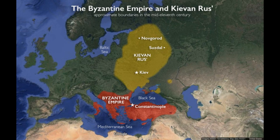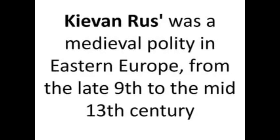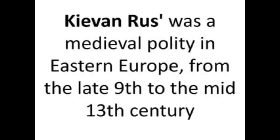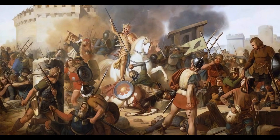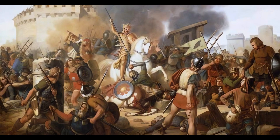Period 1: Rurik dynasty and Kievan Rus, 9th–13th century. The foundations of Russia were laid during this period. Under the leadership of the Rurik dynasty, Slavic tribes in northern Europe came together to establish the Kievan Rus state. This period includes the origins of Russian culture and Orthodox Christianity.